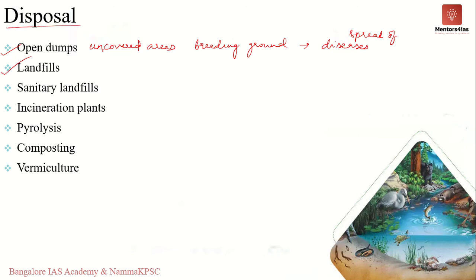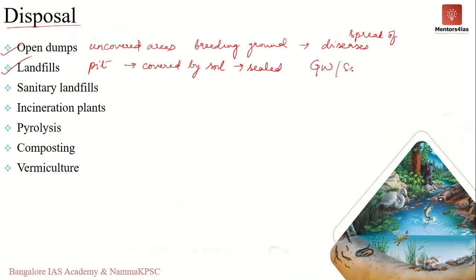The second method is landfills. Compared to open dumps, landfills are more expensive but more controlled. A pit is dug out, all the garbage is dumped into this pit, and the pit is then covered by layers of soil and sealed, which prevents the breeding of rats and flies. However, the main problem with landfills is potential contamination of soil and groundwater.